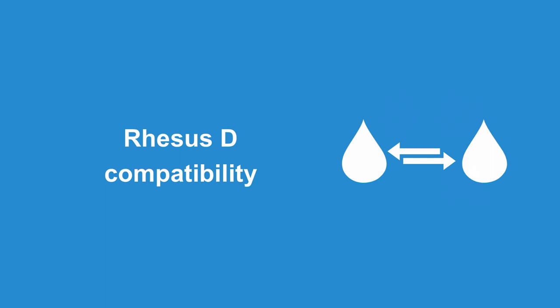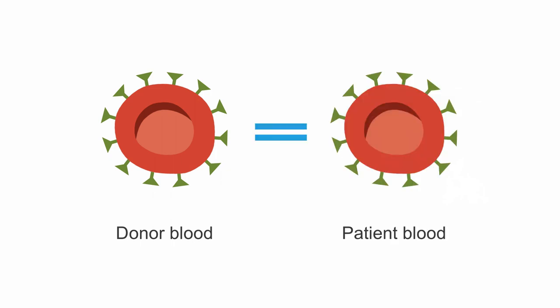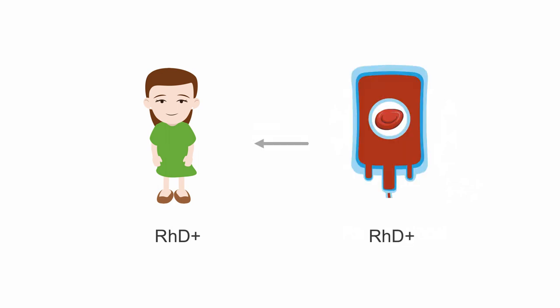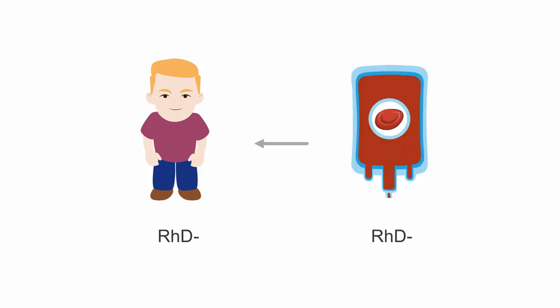Rhesus D compatibility is also important when transfusing red blood cells. In general, transfused RBCs should be identical to the rhesus D status of the patient. So a rhesus D positive patient should receive rhesus D positive blood, and a rhesus D negative patient should receive rhesus D negative blood.